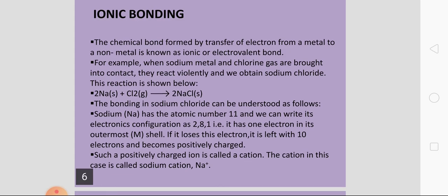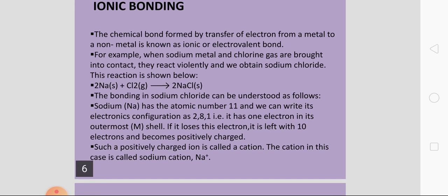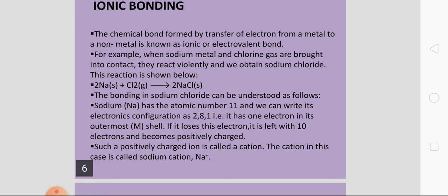For example, when sodium metal and chlorine gas are brought into contact — here sodium metal is a metal and chlorine gas acts as a non-metal — they react violently and we obtain sodium chloride. This reaction is shown: sodium + chlorine → NaCl. It is an ionic compound.